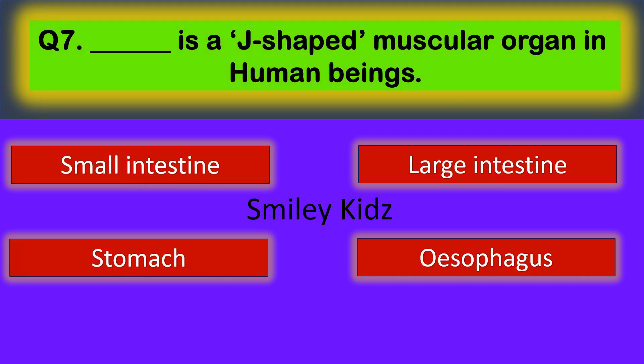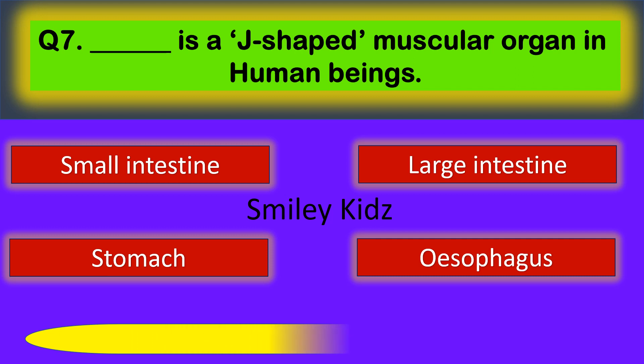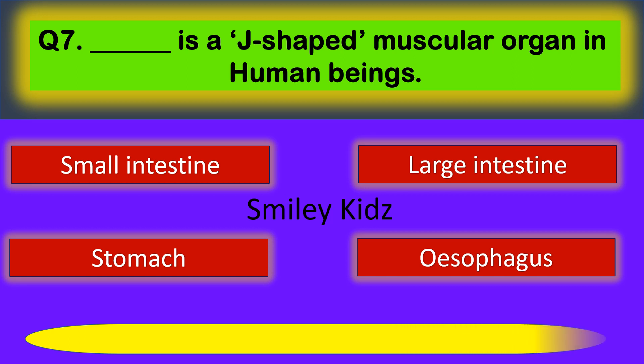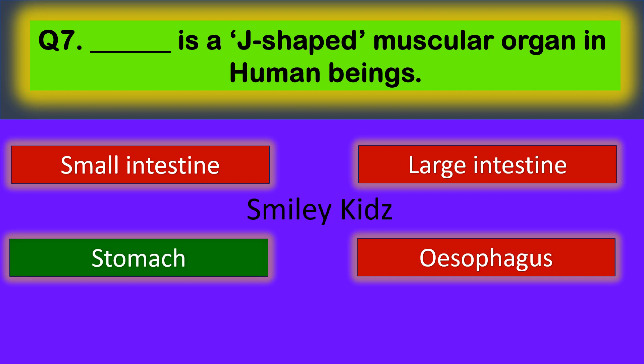Question number seven: dash is a J-shaped muscular organ in human beings. Your options are: small intestine, large intestine, stomach, and esophagus. The correct answer is stomach. The stomach is a J-shaped muscular organ in human beings.